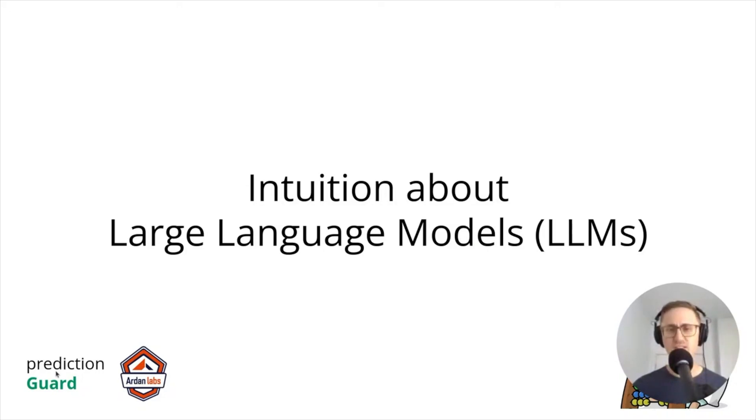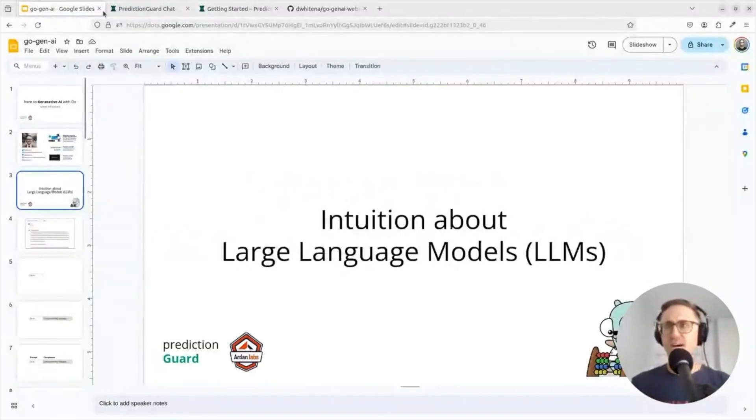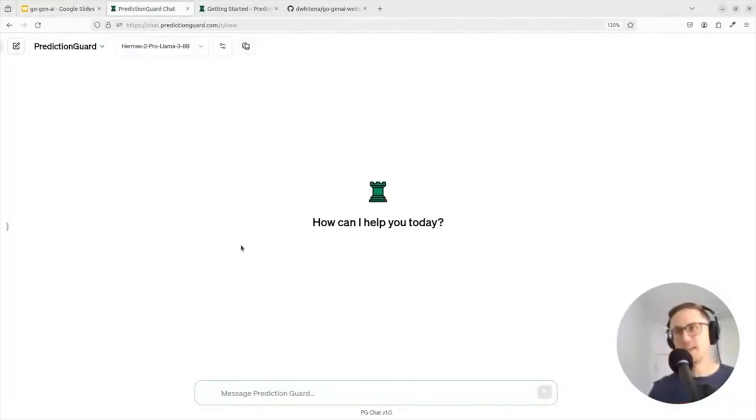So that's what we're going to do now. I'm going to pull up something here. This is just a private chat interface that I have that's running a bunch of different models through our system Prediction Guard, and what I'm going to do is just give a query.